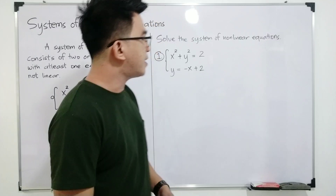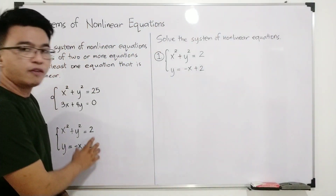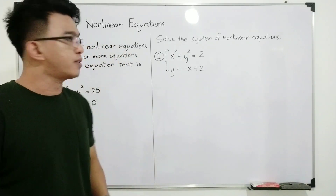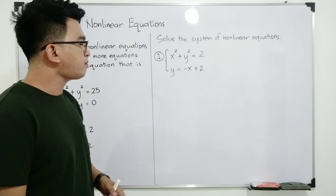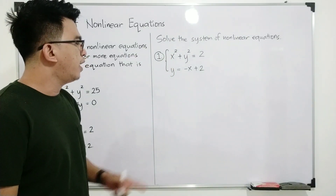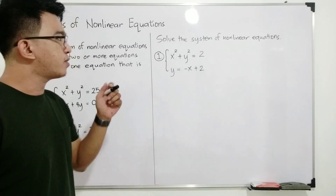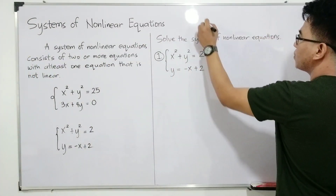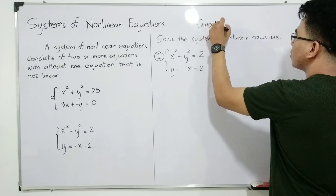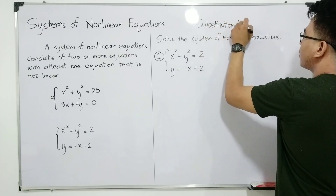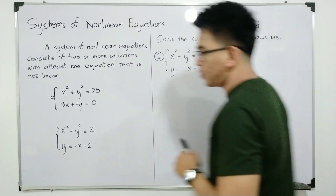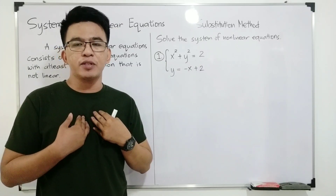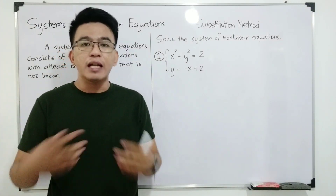Now, let's try solving a system of non-linear equations. We will solve these two examples, and let's have the second one first. Solve the system of non-linear equations. We are given x squared plus y squared is equal to 2, and then we have y is equal to negative x plus 2. I'll be using the substitution method for these examples. How do we use the substitution method? In my personal way, I will start with the linear one.